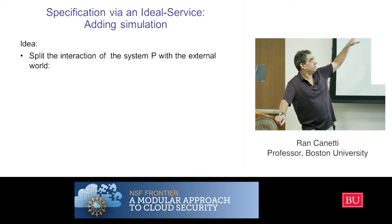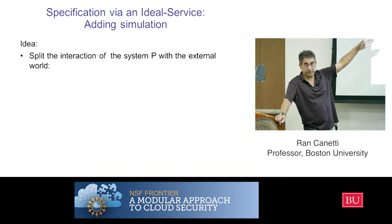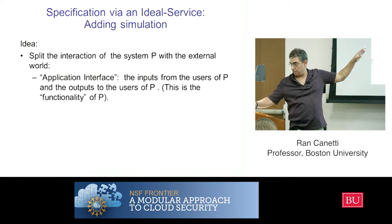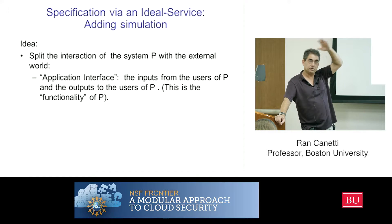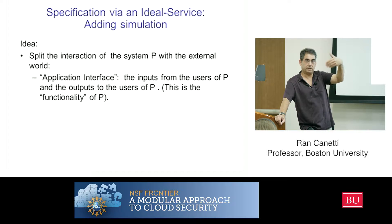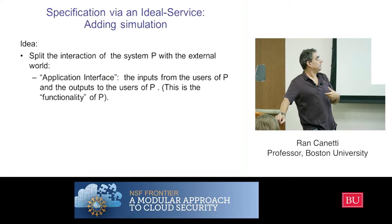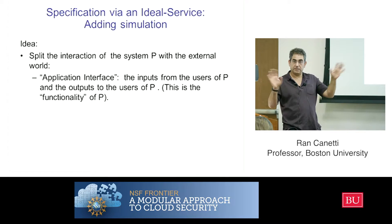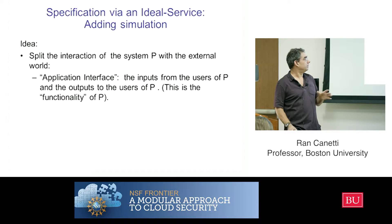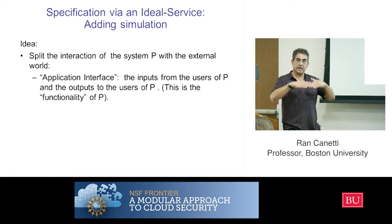What I'm going to do is split the interaction of the system P that I'm analyzing with the external world into two components. One is the API — the application interface — which is the inputs from the users and from the environment, the actual users of my system, and the outputs of my system back to those users. This could be a distributed thing, where users can be in different parts of the world. But still, that's the API of my system to the users that use it.